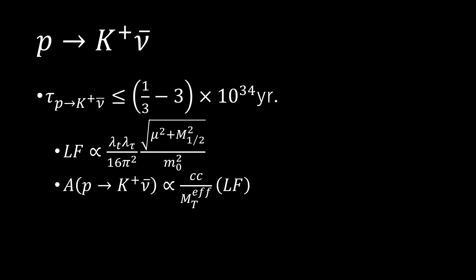This can be accomplished by taking mu and M1 half small and M0 large. Finally, the effect of Higgs color triplet mass MTEFF must be maximized.